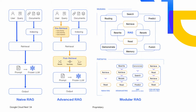Many of you would have heard of the term RAG, which typically stands for Retrieval Augmented Generation. It has been an evolving paradigm with GenAI, helping you tap into external knowledge from data sources such as Google Cloud databases. As I've been working with customers over the last few months, I've seen different types of RAG architectures emerge. The first is Naive RAG, which is very simple — just three steps: indexing, retrieval, and generation.